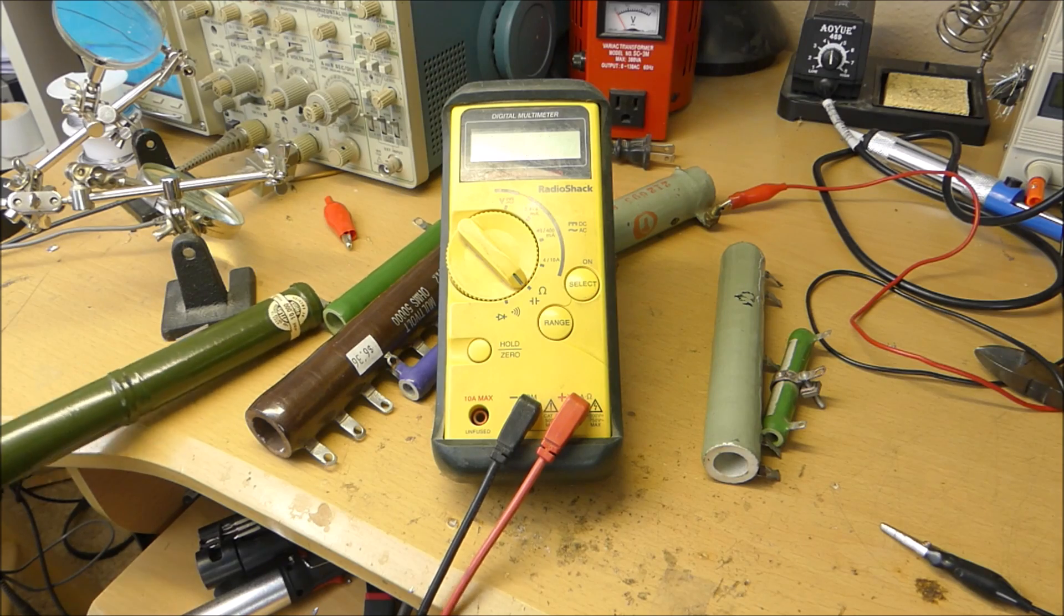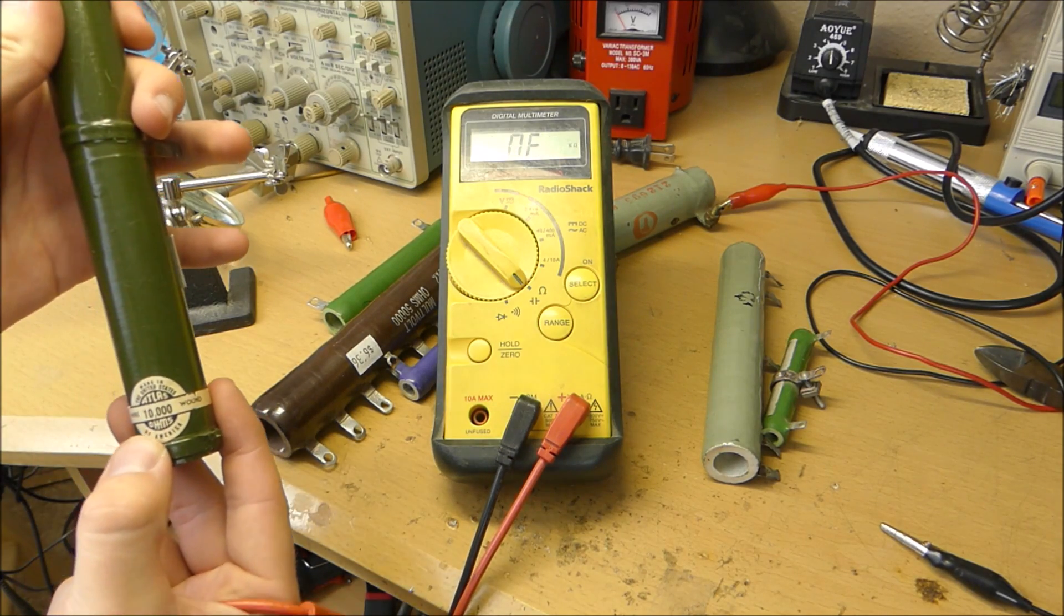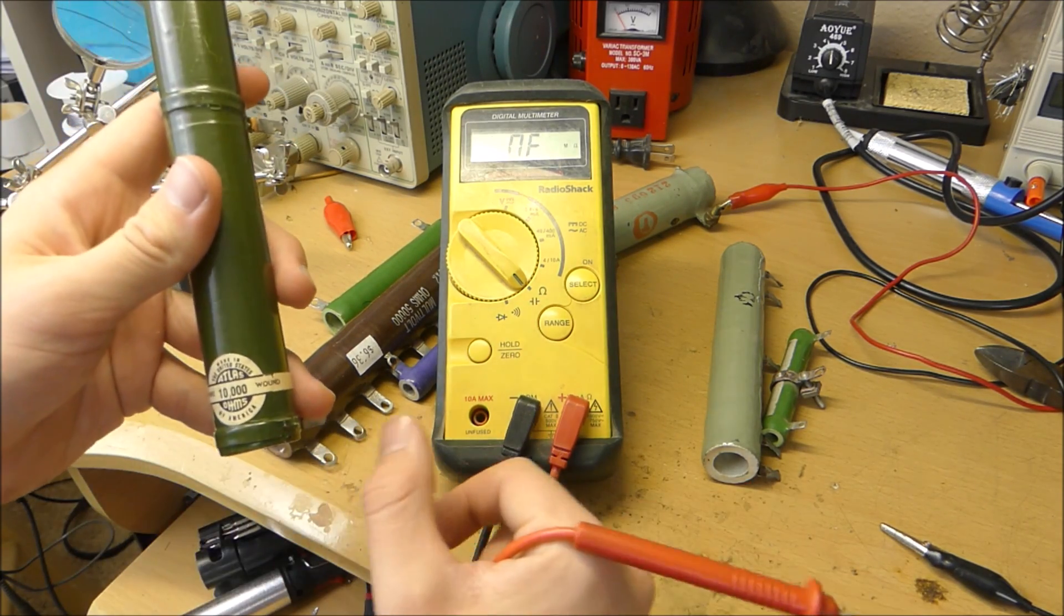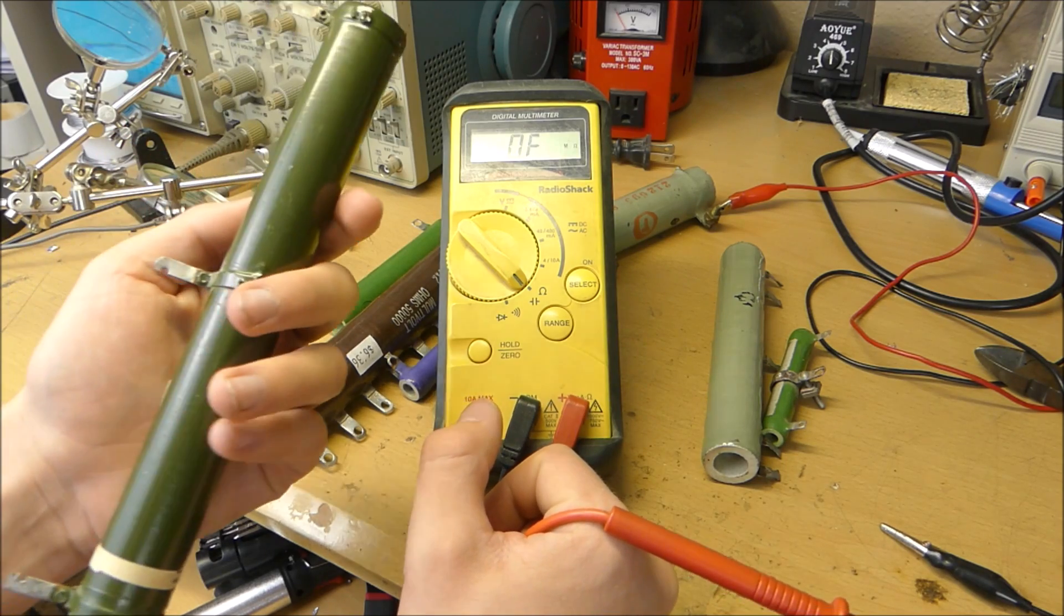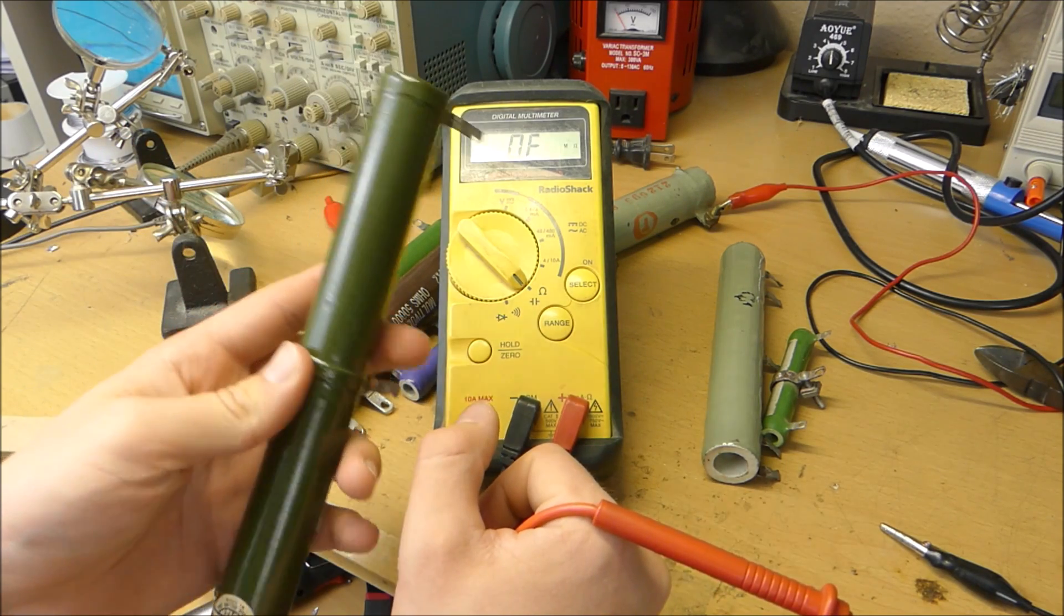This resistor right here, actually it says, it says it's rated for 10,000 ohms, but it doesn't explicitly state the wattage rating on it. So I'm not exactly sure what the wattage rating is on that specific resistor.